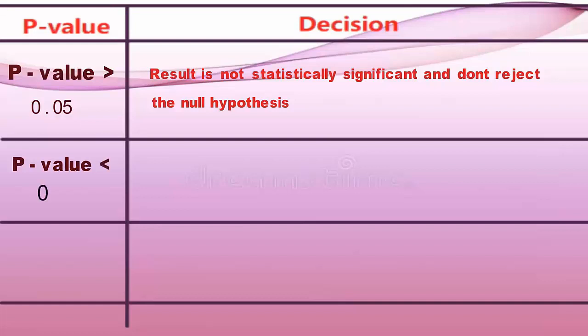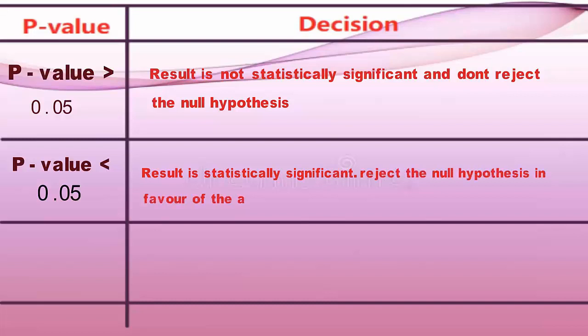P-value less than 0.05: The result is statistically significant. Generally, reject the null hypothesis in favor of the alternative hypothesis.